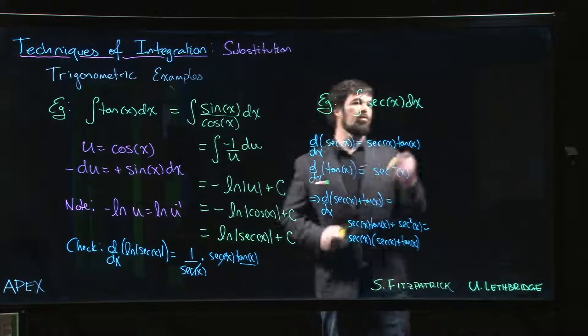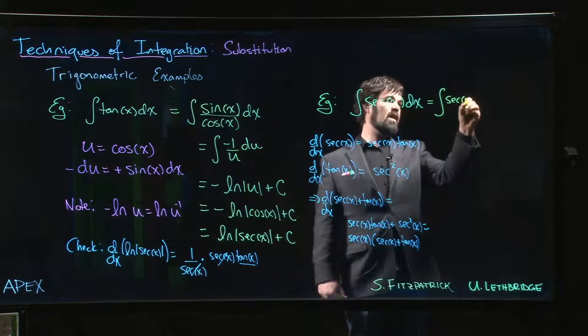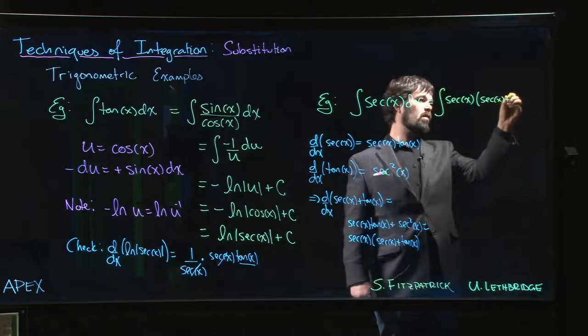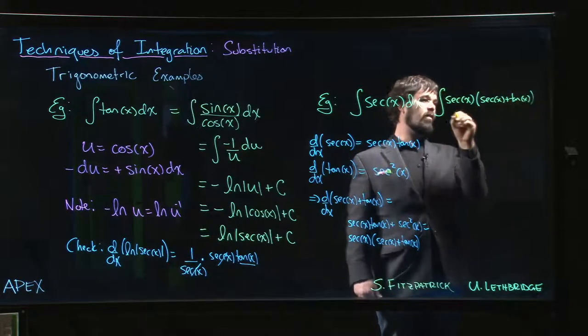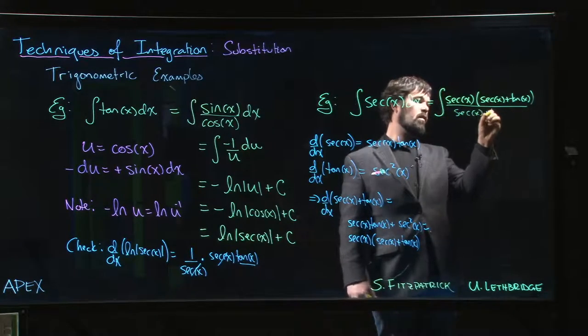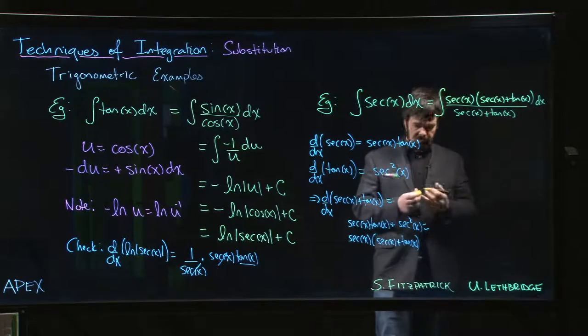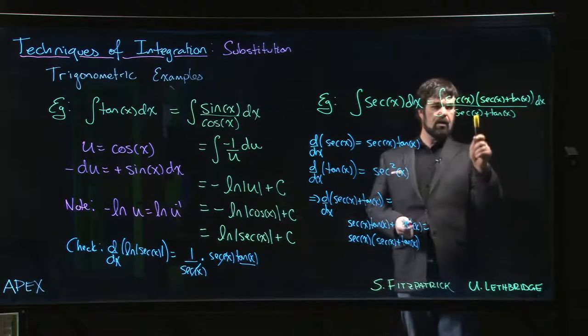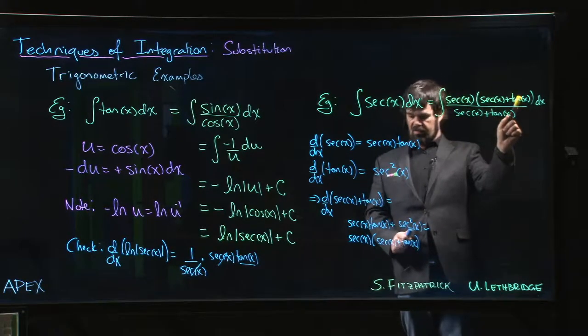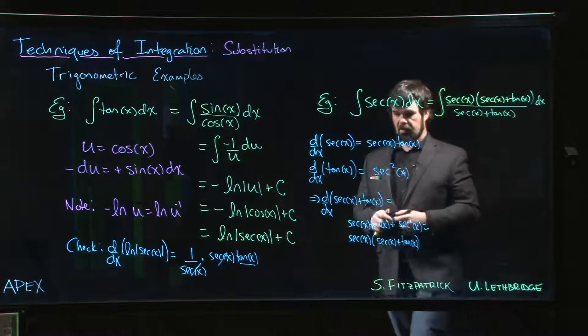So what we do is we say, well, look, this is the same thing as doing secant x times secant x plus tan x divided by secant x plus tan x. We can multiply and divide by that sum. And this is useful because now the derivative of the bottom, the derivative of secant plus tan is secant squared plus secant x tan x. We have it sitting right there. So now you're set up. Now you can do that derivative. Now you can say, okay...